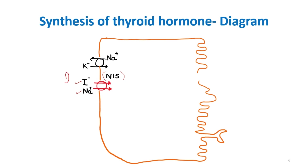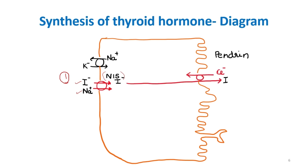The second step is conversion of iodide to iodine. Iodide is first transported out of the cell by the channel called pendrin, which is a chloride-iodide exchanger. There, iodide is converted to iodine by the enzyme peroxidase.